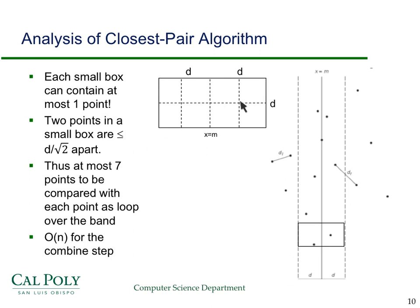If you compute that using the Pythagorean theorem, what you get is that two points in a small box can be at most d/√2 apart. So they have to be less than d. What that means is there can only be one point in there, because if there were two points, they'd be closer to each other than d and they'd be on the same side of the median. So there's at most seven points that can be compared to each point as the loop goes up. That means this whole step is basically going to be O(n).